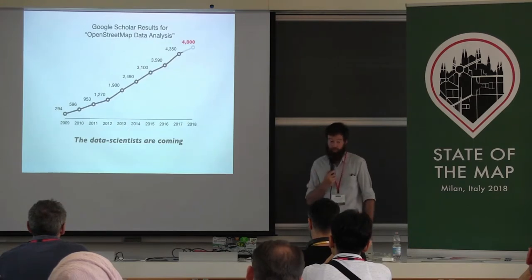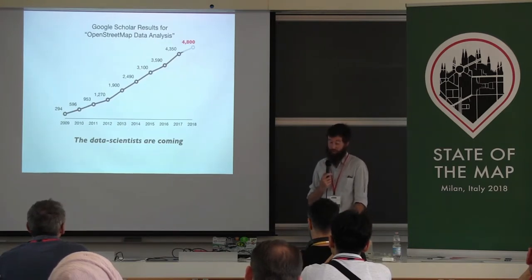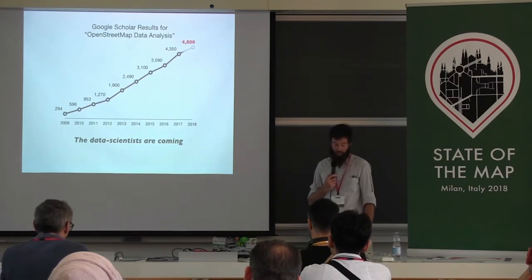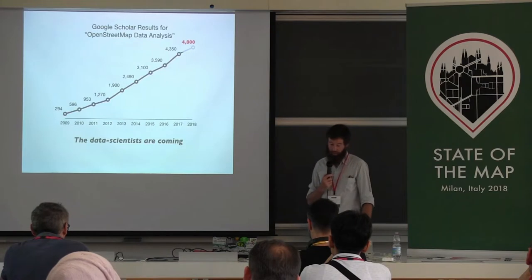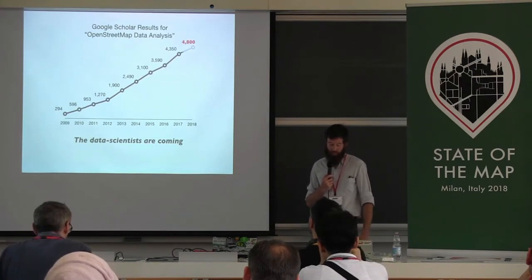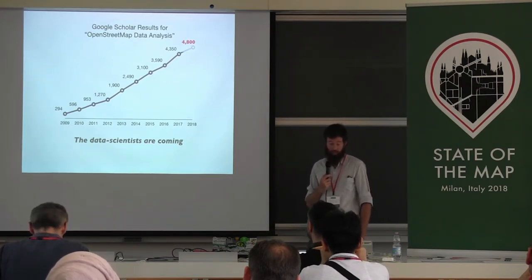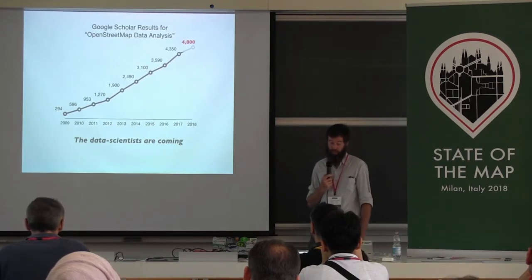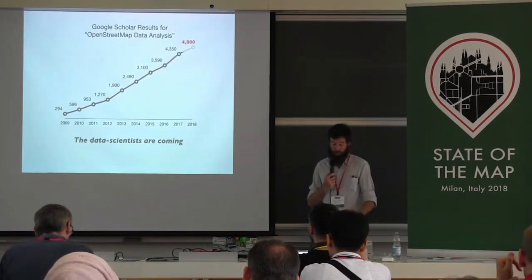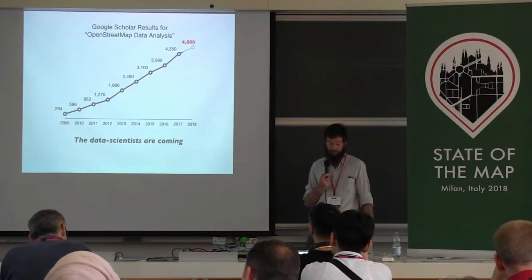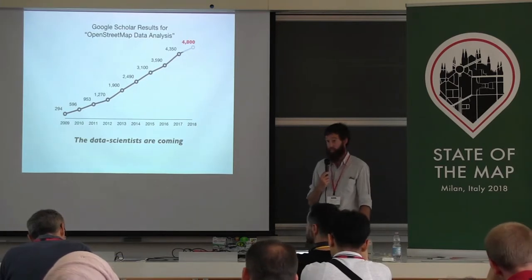Extrapolating the number of articles already present on Google Scholar for 2018, we're on track to continue growing at this rate. The data scientists are coming. It's important that the analysis tools available to these new researchers can expose the expansive history of the map to help them see, too, that OSM is more than just a map, and that history is imperative to understand for complete and accurate analysis.